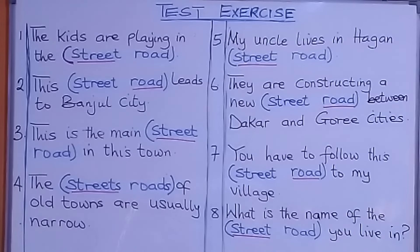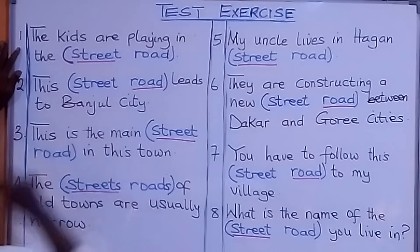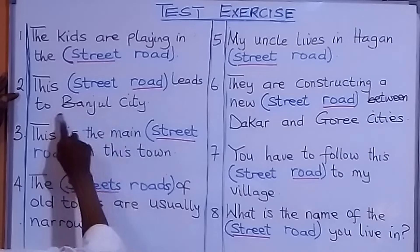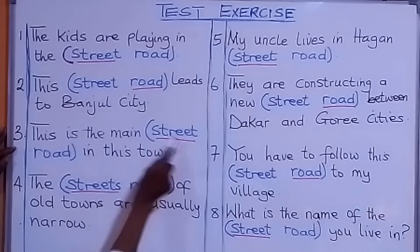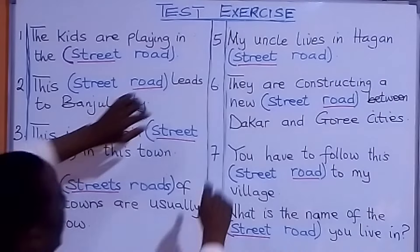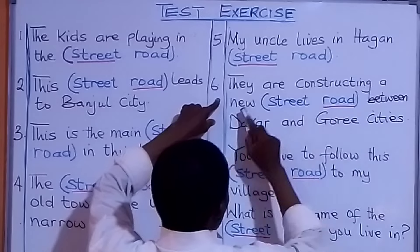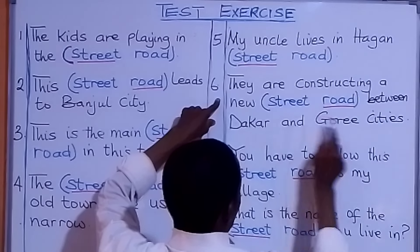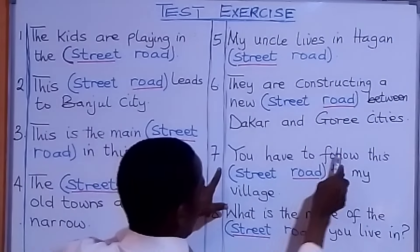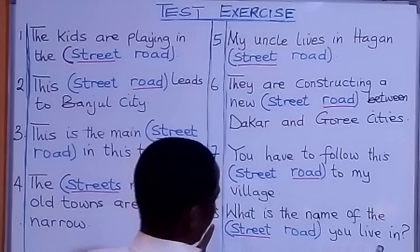Let us read the answers we have underlined together with the sentences. The kids are playing in the street. This road leads to Banju City. This is the main street in this town. The streets of old towns are usually narrow. My uncle lives in Hagan Street. They are constructing a new road between Dakar and Gori cities. You have to follow this road to my village. What is the name of the street you live in?